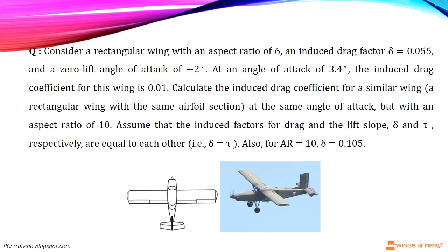Assume that the induced factors for drag and lift slope delta and tau respectively are equal to each other. Also for aspect ratio is 10 and induced drag factor delta is 0.105.